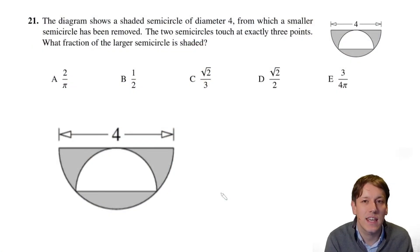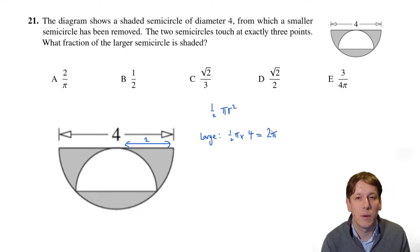So we're looking for this shaded area here, which is the difference between the area of the large semicircle and the smaller semicircle. For the larger semicircle we can see that we've got a radius here which is half of the diameter which is 2. Now the area of a circle is pi r squared, so for a semicircle that's a half pi r squared, so for the large semicircle that's a half times pi times 2 squared or times 4, so that gives us an area of 2 pi.